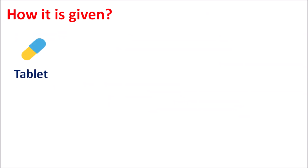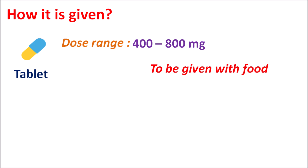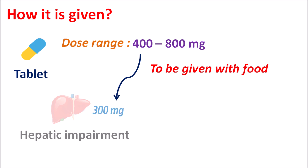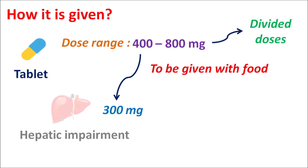Imatinib is available as a tablet. The dose depends on the type of clinical indication, with the normal dose range being 400 to 800 mg. The drug should be given along with food to reduce gastrointestinal side effects. In people with hepatic impairment, the dose should be reduced — 300 mg can be given to treat leukemia. When the dose is increased to 800 mg, it should be given as divided doses to reduce toxic effects.